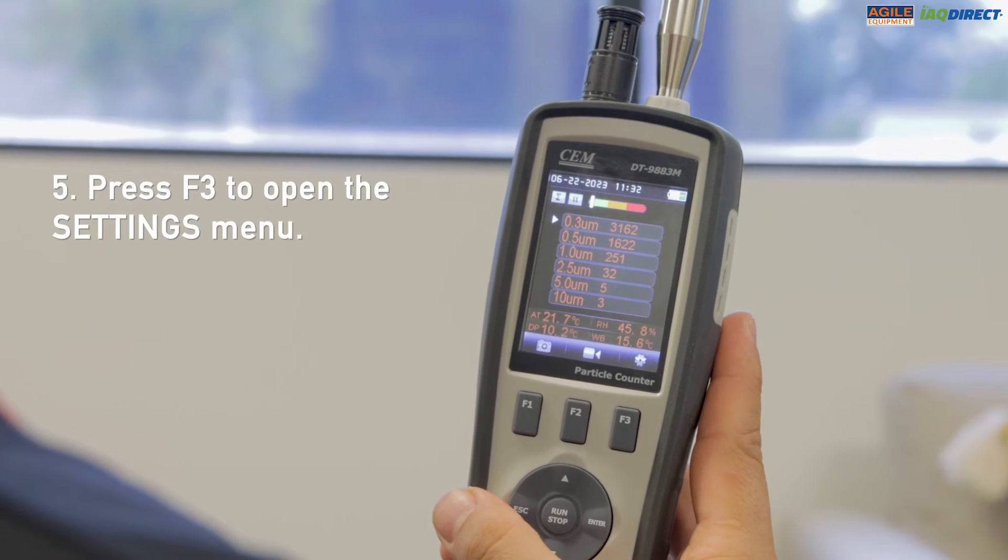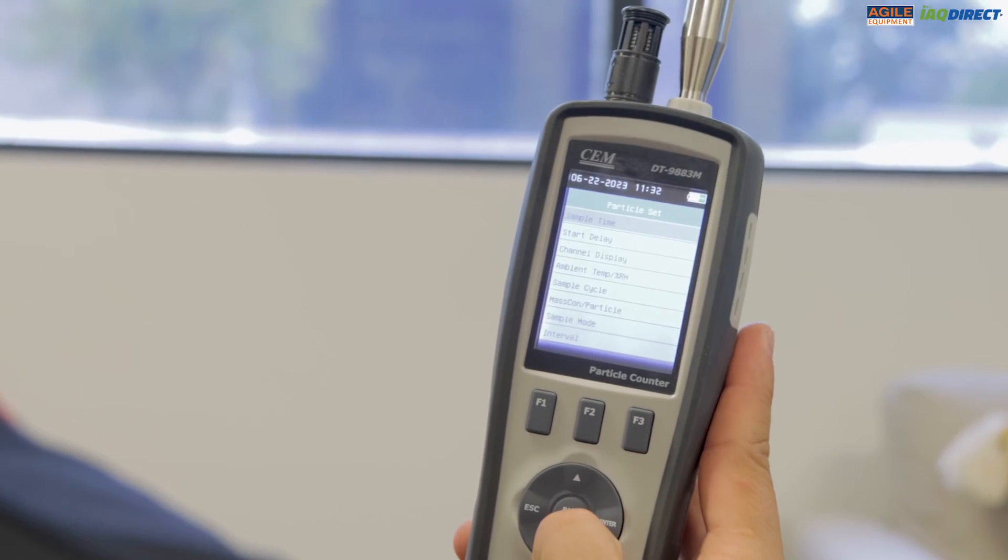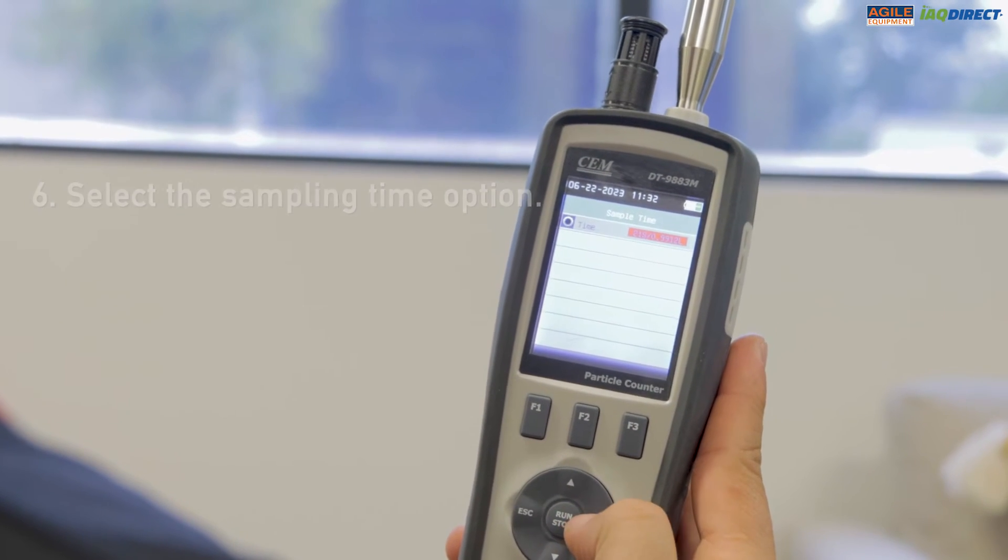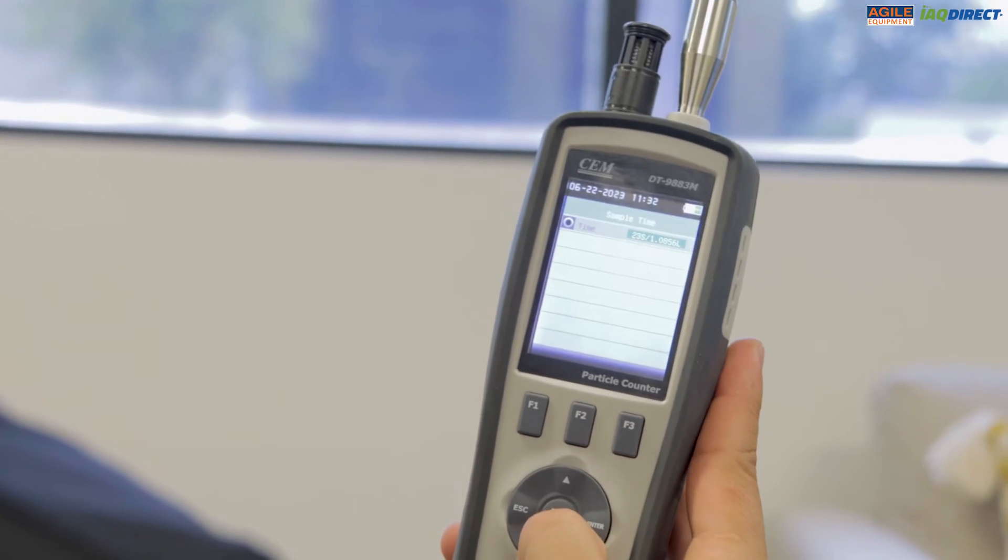Whilst in particle mode, press the F3 button to open the settings menu and select the sampling time option. By using the arrow keys, you can change the sampling time to your preference.